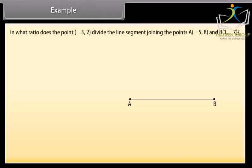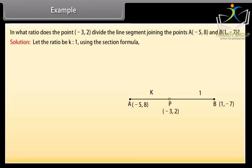Example. In what ratio does the point minus 3, 2 divide the line segment joining the points a, minus 5, 8 and b, 1, minus 7? Solution. Let the ratio be k is to 1 using the section formula. Minus 3, 2 is equal to k minus 5 by k plus 1, minus 7 k plus 8 by k plus 1. So, minus 3 is equal to k minus 5 by k plus 1.